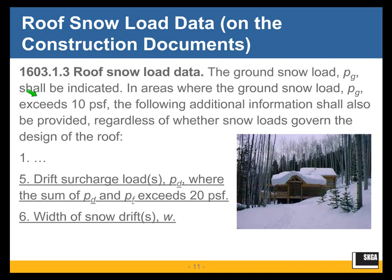A number of things that are not probably the same degree of importance. Roof snow load data that have to be shown on construction documents. In areas where the ground snow load exceeds 10 pounds per square foot, the following additional information shall be provided on the construction documents — the drawings and the specs — including drift surcharge load and width of snow drifted. The point is additional data are now being required to be shown on the drawings and specs when ground snow load exceeds 10 pounds per square foot, which is not that high a threshold.